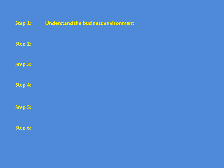The second step is to identify the critical assets. Once you are aware of the business environment, you need to identify the critical assets that support that particular business. The third step is to identify all potential risks for those critical assets — the assets that support that business environment.